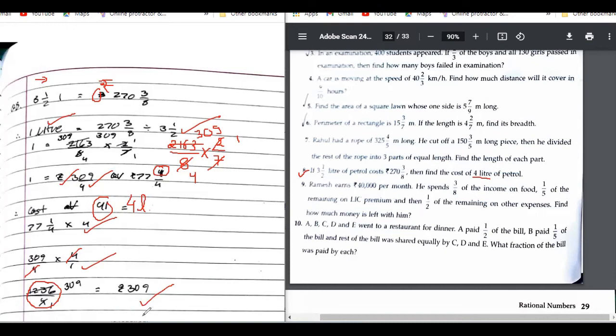See, you are again wasting your time by multiplication, isn't it? Four and four get cancelled, you will still get the same answer. Yes, okay. Apply cancellation. Four gets cancelled, answer is 309. Final statement: therefore the cost of four liters of petrol equals to 309 rupees. Is this thing clear? Yes.